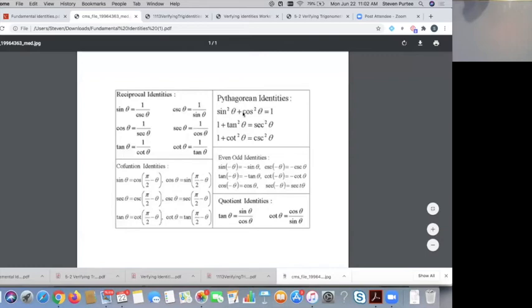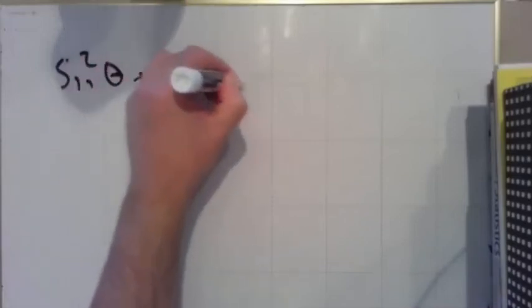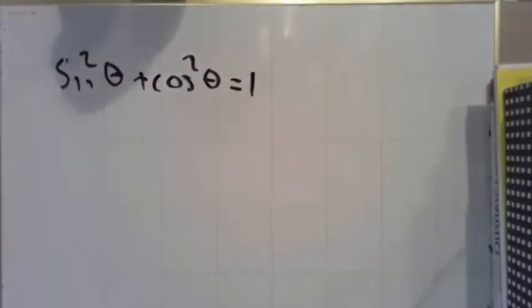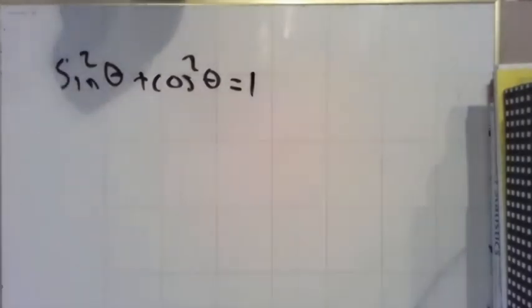So let's talk about these Pythagorean identities first. So our basic one that we've had, we've had this for a while, sine squared of any angle plus cosine squared of any angle equals one. That's literally just the Pythagorean theorem. That's all that is.